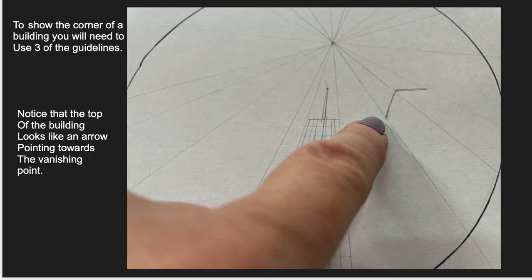If you want to do the corner of a building, this is how you go about it. You use three guidelines, and you basically want to make what looks like an arrow pointing to the vanishing point. You'll notice it looks like a wide end of an arrow. So that's how you set up the proper perspective.